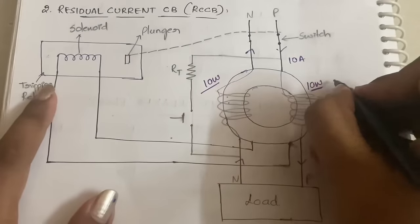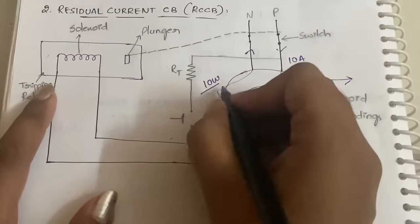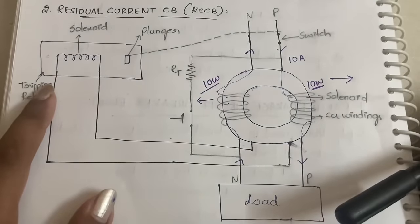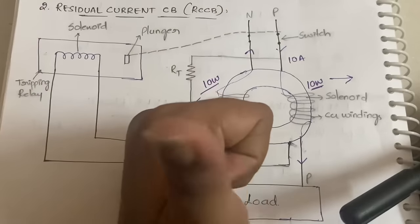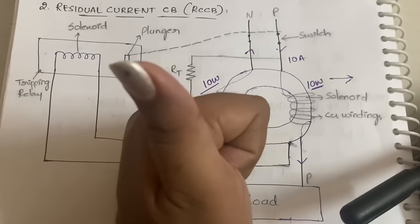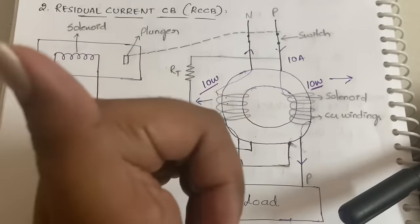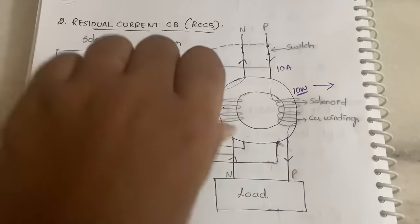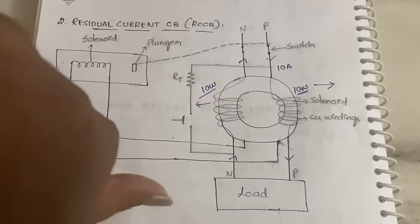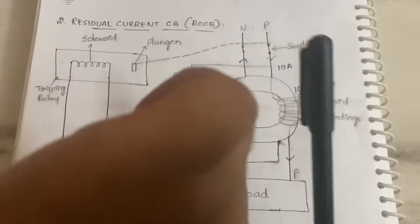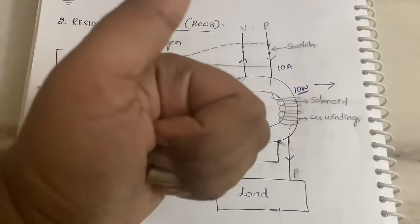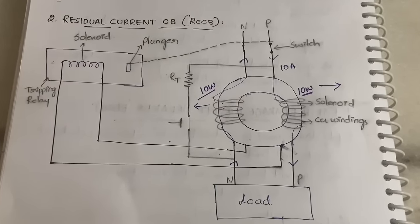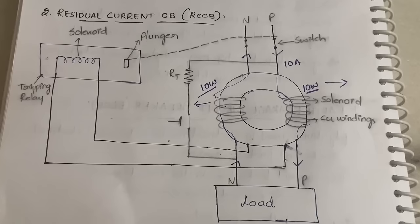These two magnetic fields are in opposite directions, as determined by the right hand thumb rule — the thumb indicates current direction and the curl of the fingers indicates the magnetic field direction. So 10 webers in one direction and 10 webers in the opposite direction.